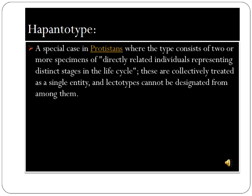A paralectotype is a special case in protists where the type consists of two or more specimens of directly related individuals representing distinct stages in the life cycle. These are collectively treated as a single entity, and lectotypes cannot be designated from among them.